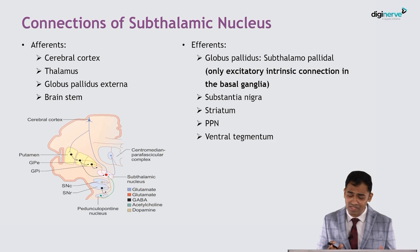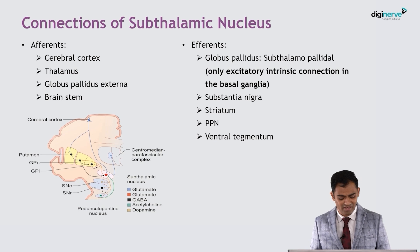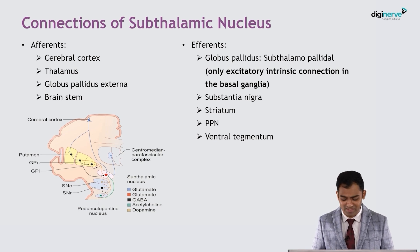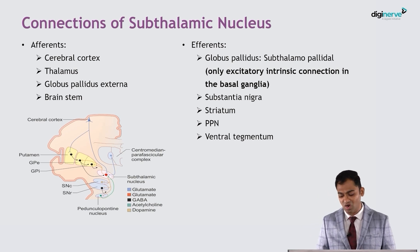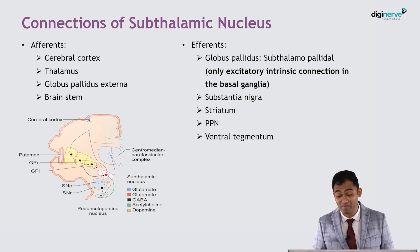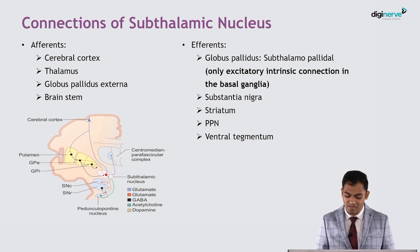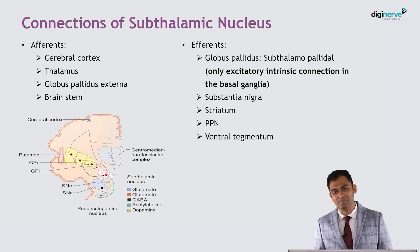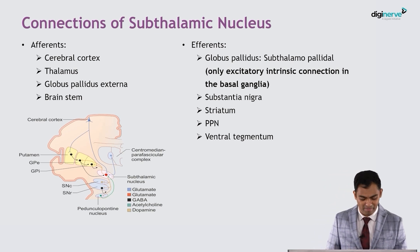Now the connections of the subthalamic nucleus. It will receive afferents directly from the cortex, from the thalamus, from the pallidum — mainly globus pallidus externa — and also from the brainstem. It will give efferents to the globus pallidus interna, called the subthalamopallidal fibers. As mentioned earlier, these are the only excitatory glutamatergic intrinsic connections of the basal ganglia. It will also give efferents to the substantia nigra, the striatum, the PPN, and the ventral tegmentum.